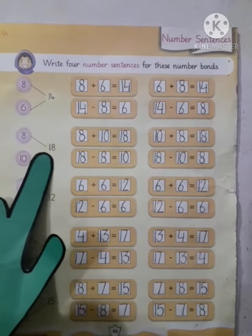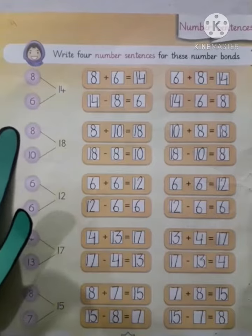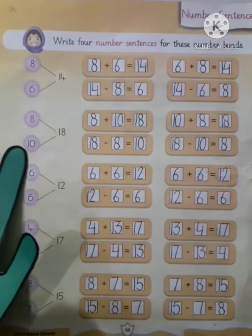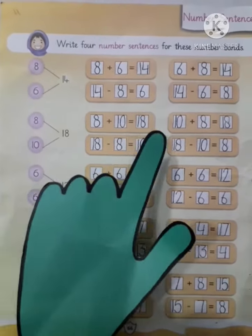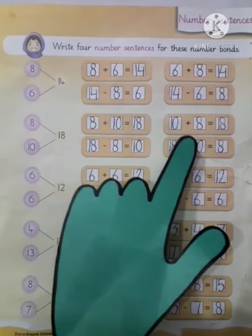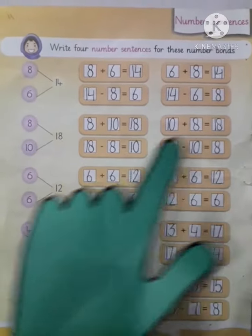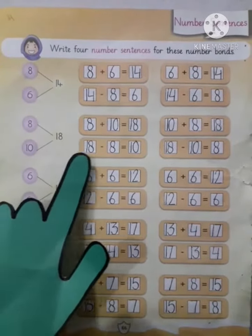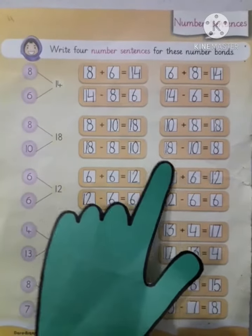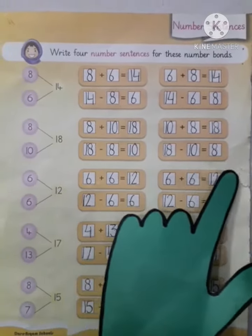Next question. The whole number is 18. One part is 8, the other part is 10. 8 plus 10 equals 18, and 10 plus 8 equals 18. Now do subtraction: 18 minus 8 equals 10, and 18 minus 10 equals 8.